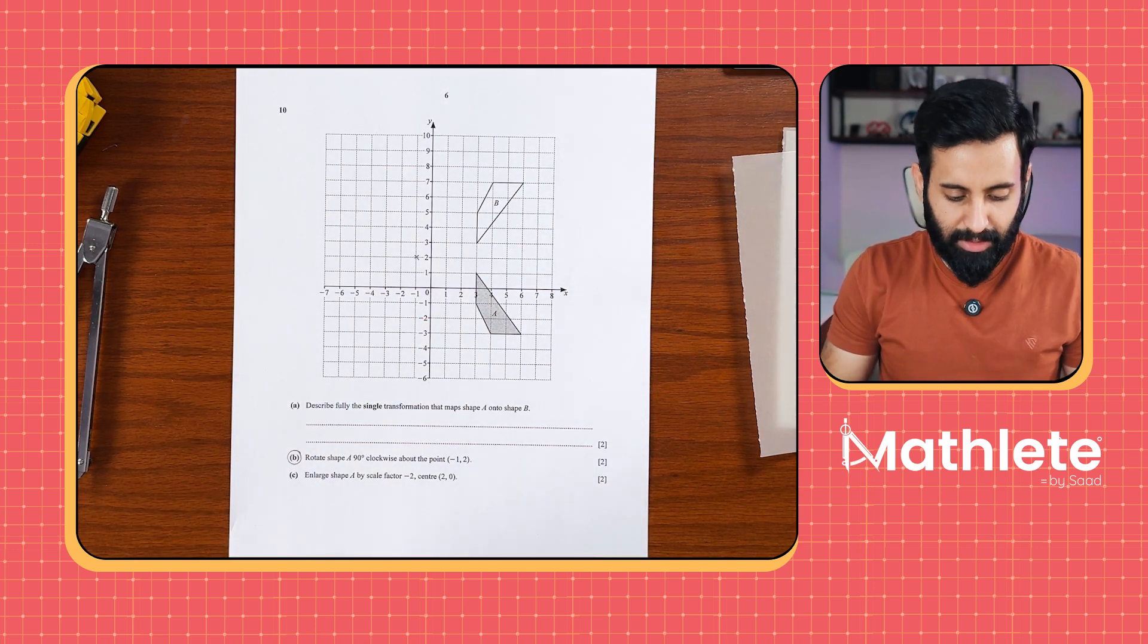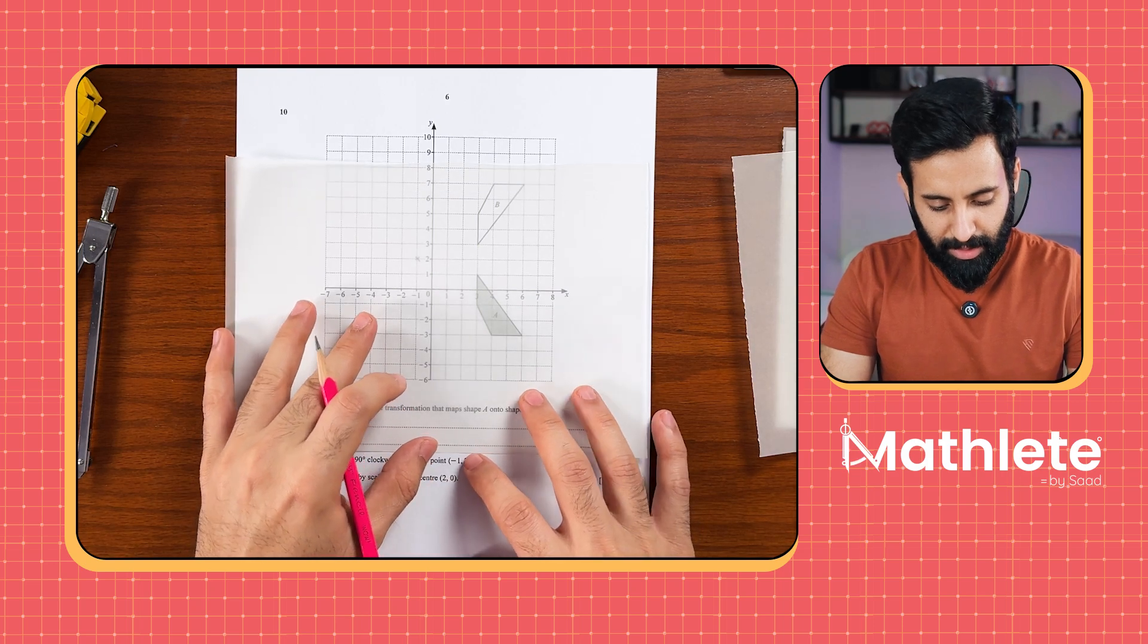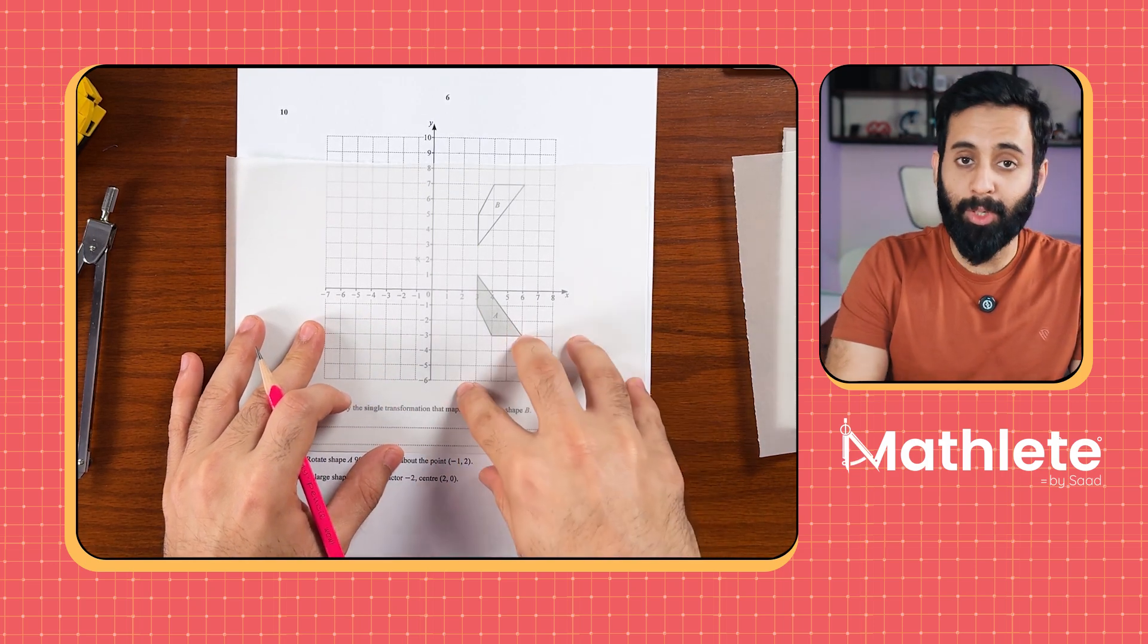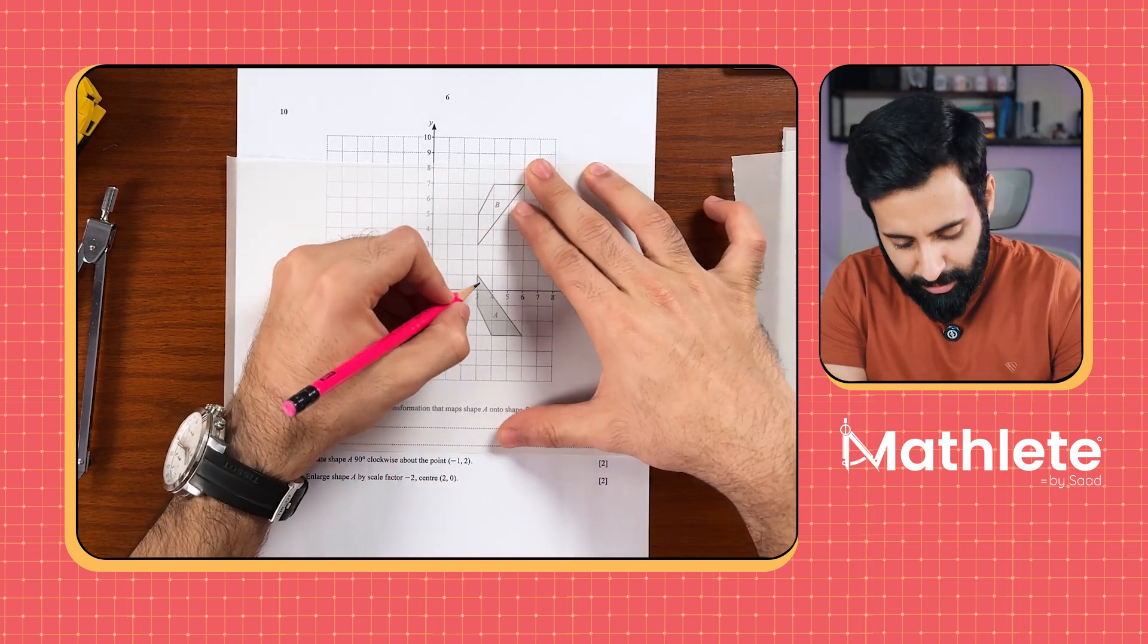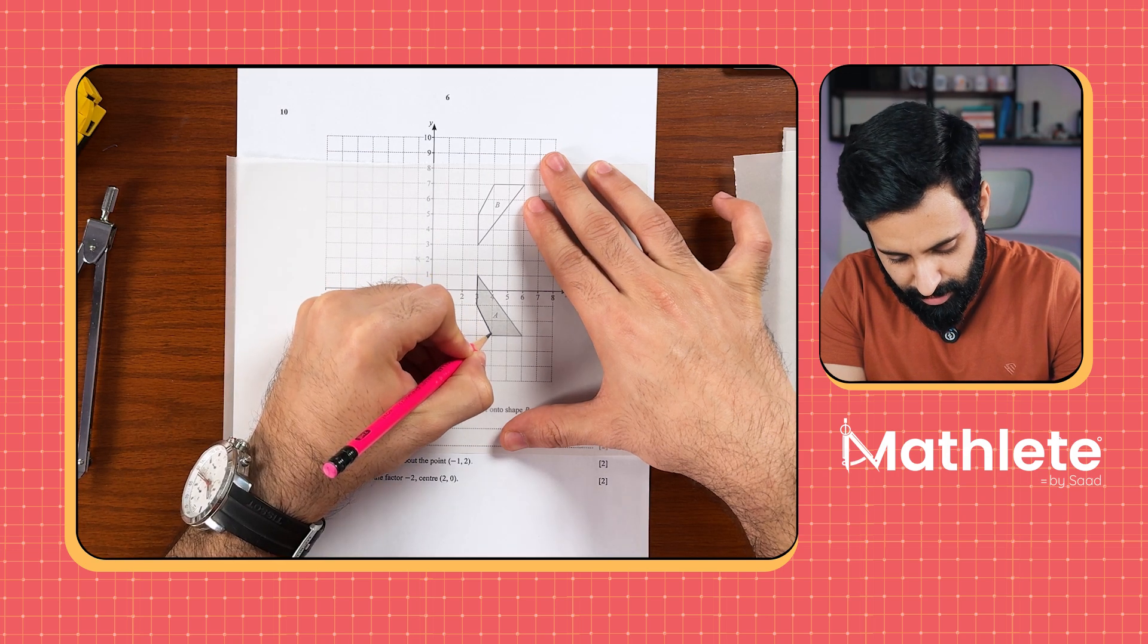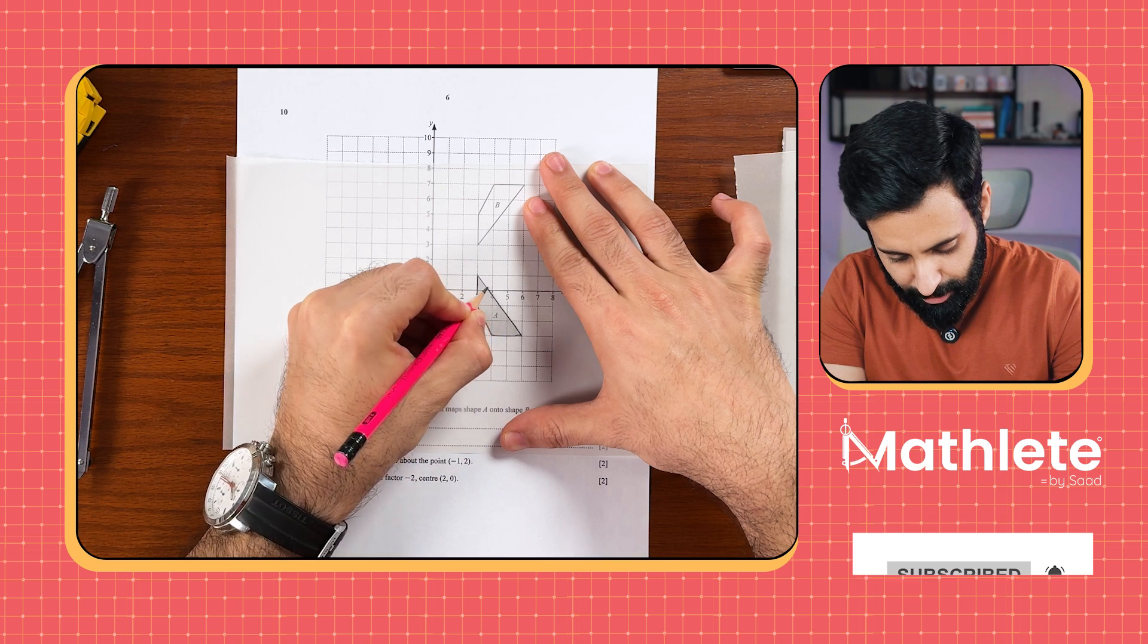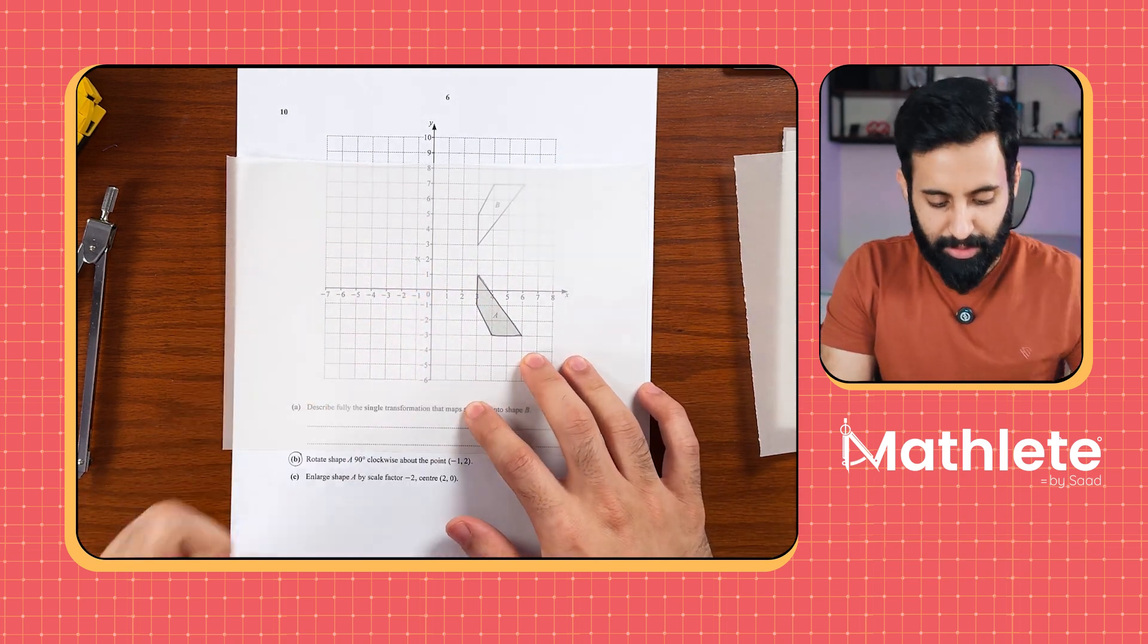Now let's learn how to use the tracing paper to rotate. What you want to do is trace the shape that you want to rotate, that is the object which is shape A in our case. So I'm going to do that here it is. Just be gentle because if there are multiple questions then you want to be able to clean your tracing paper, just erase everything and use it again.